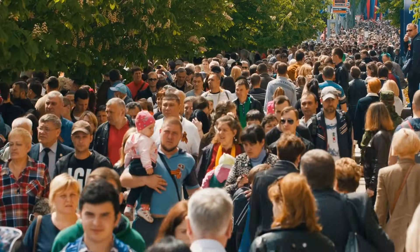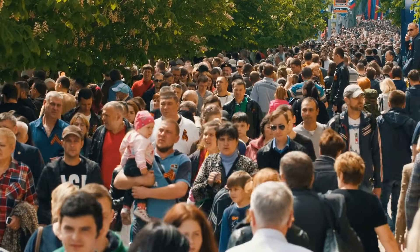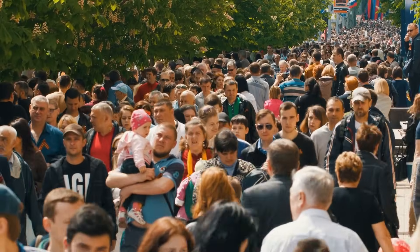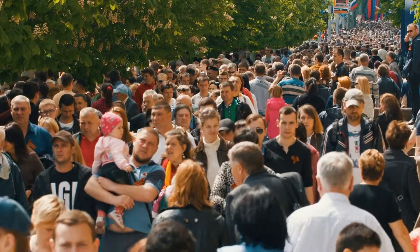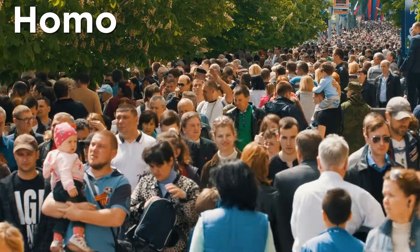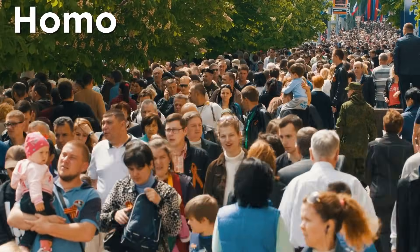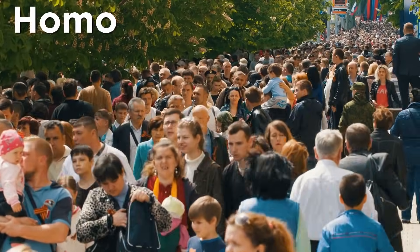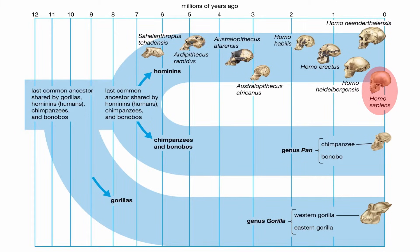As we move through this anthropology series, we are getting closer and closer to modern humans, and in this tutorial we will get closer still as we discuss the genus Homo. Homo is the genus modern humans belong to, and the oldest members show up in the fossil record around 2.8 million years ago, found in East Africa.